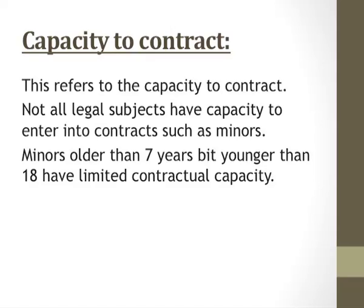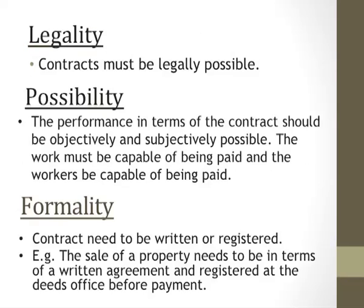Capacity to contract. Not all legal subjects have the capacity to enter into contracts, such as minors. Minors older than seven years but younger than 18 have limited contractual capacity, meaning that you cannot enter into a contract with a one-year-old, because a one-year-old can barely read or write or make decisions on their own. Legality means contracts must be legally possible — you cannot enter into a contract which is illegal. Whatever you are agreeing on must match the laws set in place by our constitution.